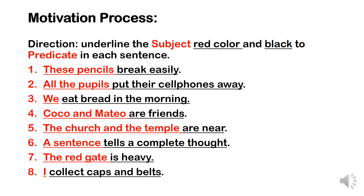Second sentence: 'all the pupils put themselves on the way.' All the pupils, underlined with red, is our subject. Put themselves on the way, underlined with black, is our predicate — it tells about what the subject does, referring to the pupils. Third: 'we ate and breathed in the morning.' We is the subject, underlined with red. Ate and breathed in the morning, underlined with black, is the predicate — it talks about what the subject does.